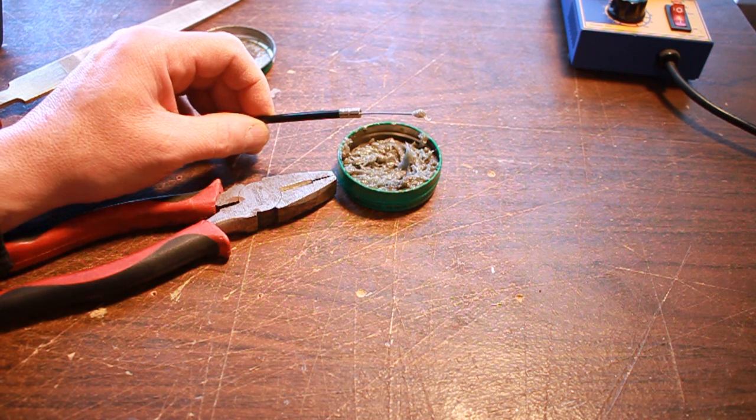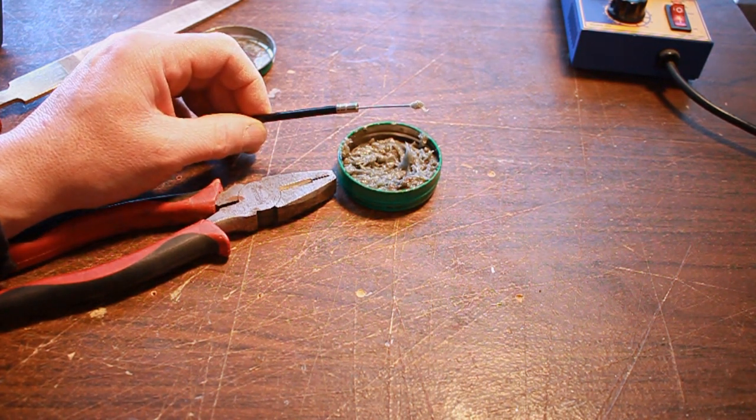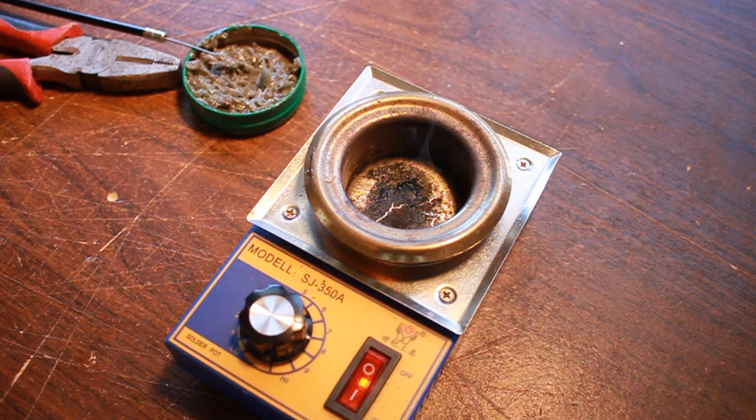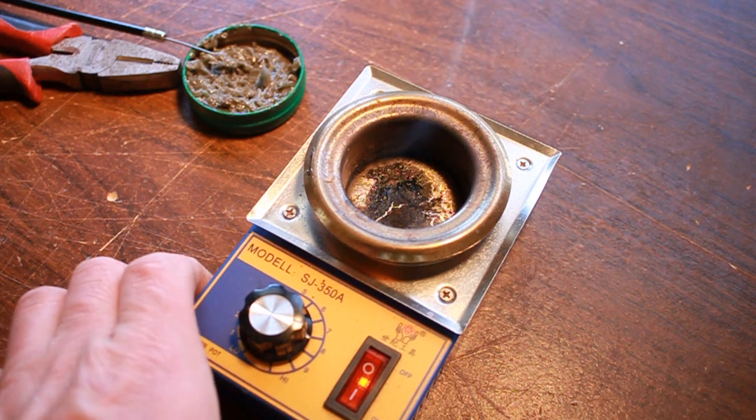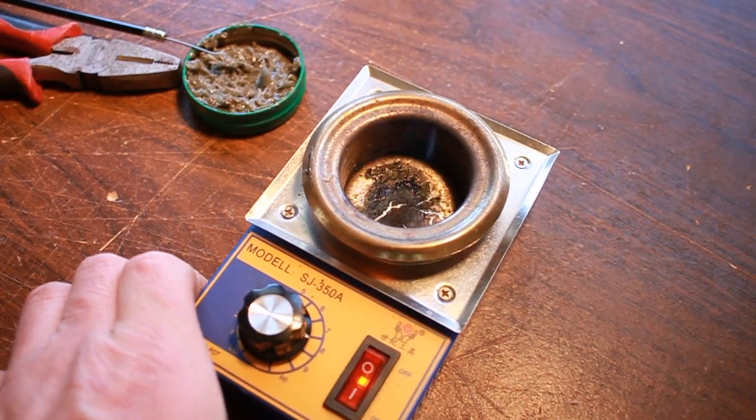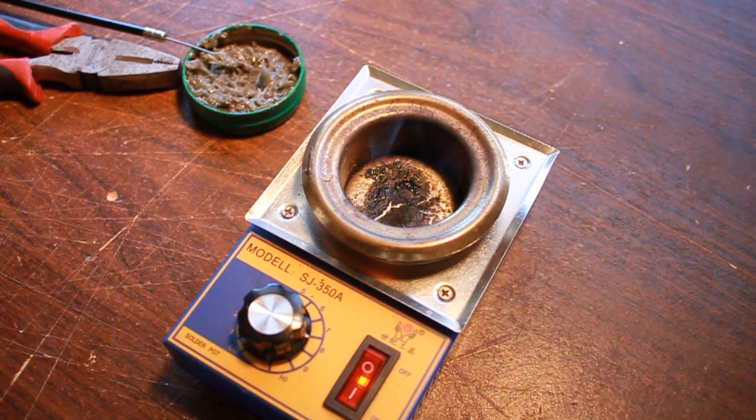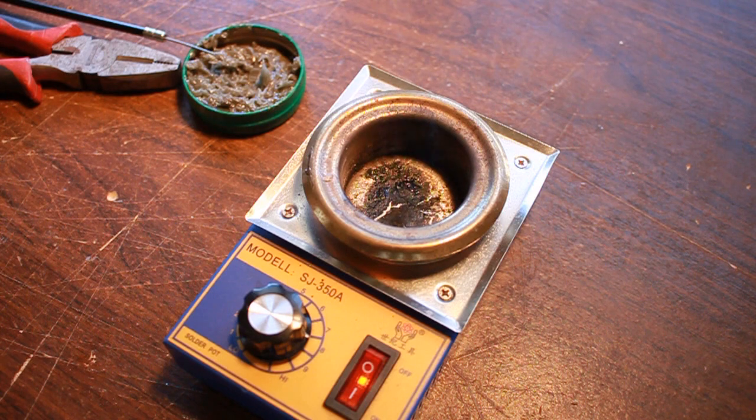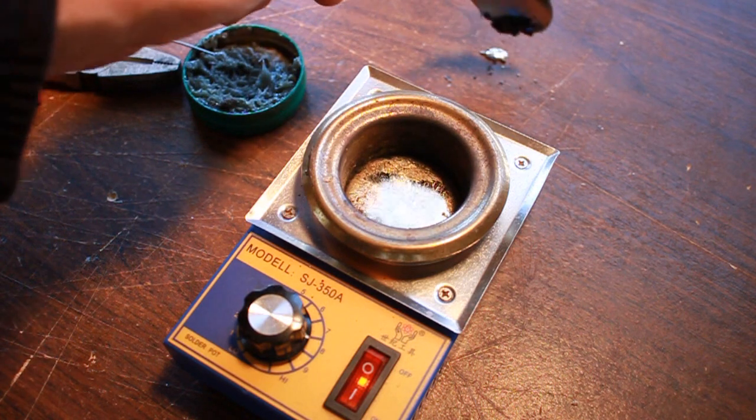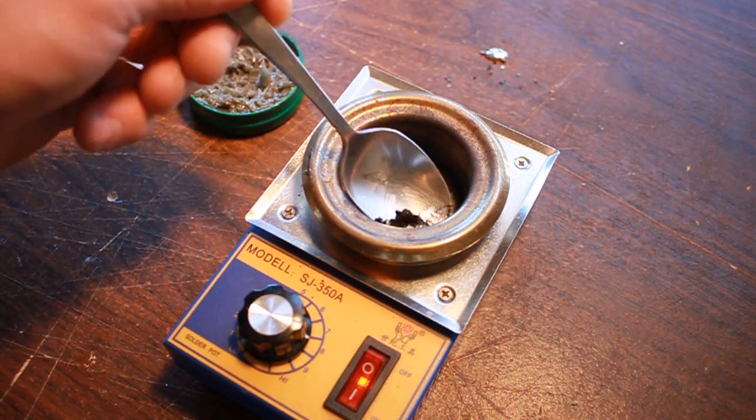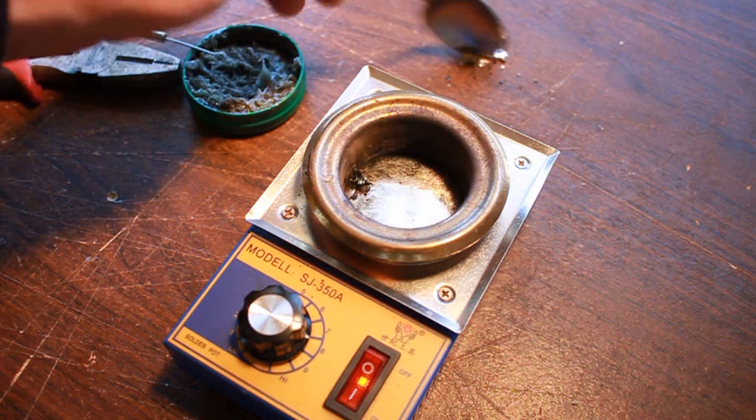You can see here that the solder pot is pretty much ready to go. The black stuff on the top is the flux from the previous time I used it. So usually what I just do is go ahead and spoon out this junk. Again, this solder has been used over and over. It's running a little bit low here but I still have plenty left for this.